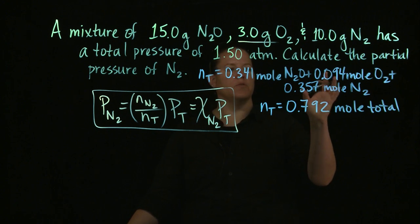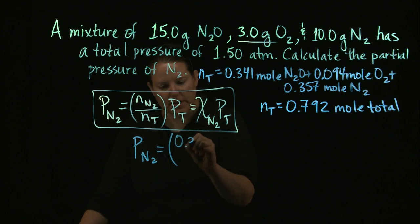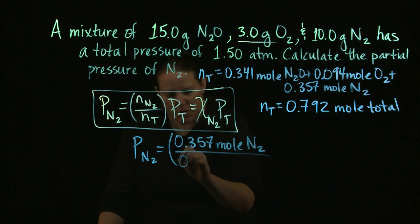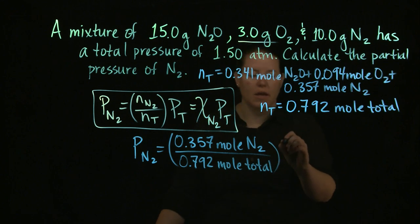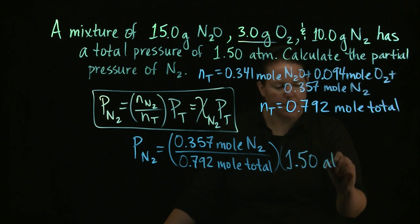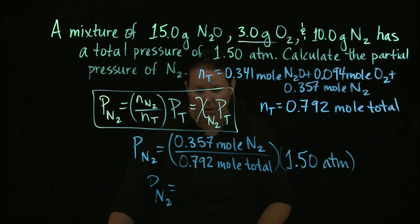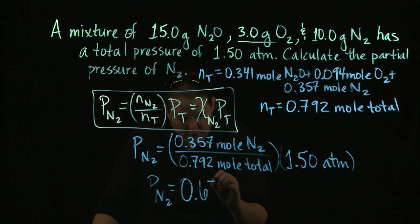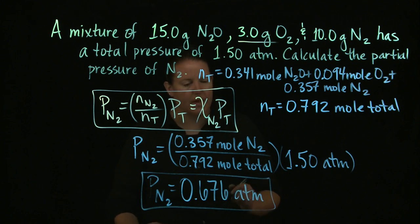Now all I have to do is I have to put the individual moles of N2, right? If I want the partial pressure of N2, I put the individual number of moles of N2, 0.357 moles of N2 over the total number of moles, which is 0.792 moles total. Wow, that is a squeaky marker. And multiply it times the total pressure. Bam. Love it when things go quickly. Alright, so here we go. We got 0.357 divided by 0.792 equals times 1.5. The pressure N2 exerts on the container is 0.676 atm. And that is our final answer.